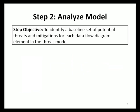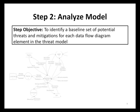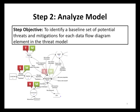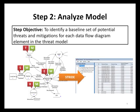After an application design has been modeled as a data flow diagram, the next step is the analyze model step. In this step, potential threats against the data flow diagram are identified and mitigations for those threats are documented on a per data flow diagram element basis. The tool generates a baseline set of potential threats using the STRIDE per element technique. Generating threats using STRIDE allows the process to be used by both security experts and non-security experts, and allows threats to be generated in a more repeatable and objective fashion.